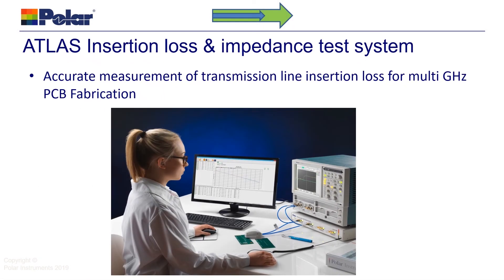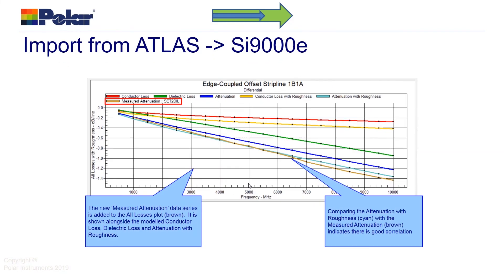For PCBs where you need to control insertion loss as well as impedance, the ATLAS insertion loss test system allows you to measure insertion loss using the SDD21, SPP or delta-L methods. Just as you can bring impedance test results back into the SI8000 from the SITS, you can also bring insertion loss test results back into the SI9000 from ATLAS. This graph shows you how you can look at the full details of the simulated insertion loss and compare that with the measured results brought in from ATLAS.